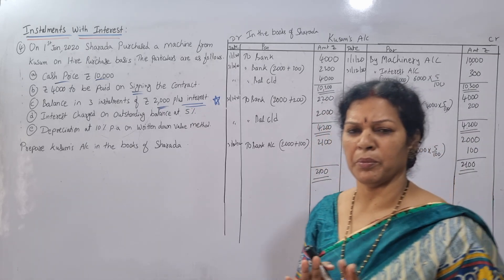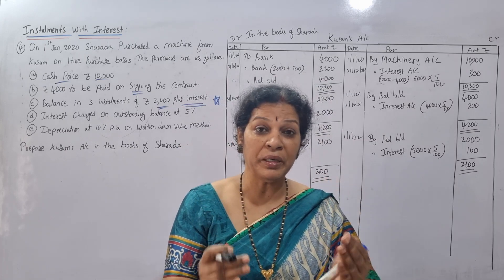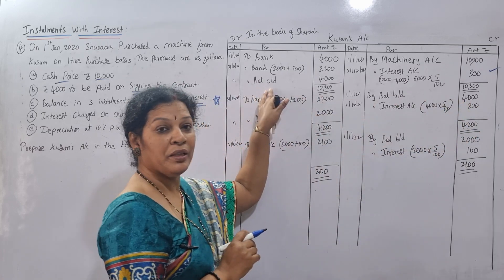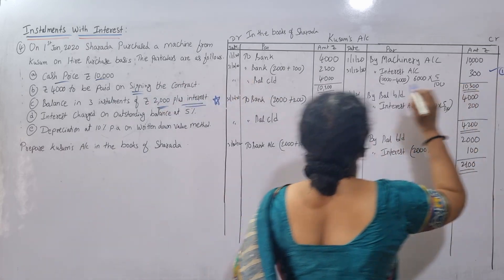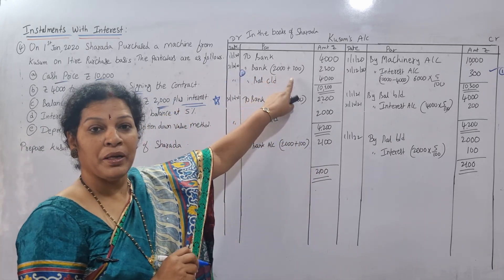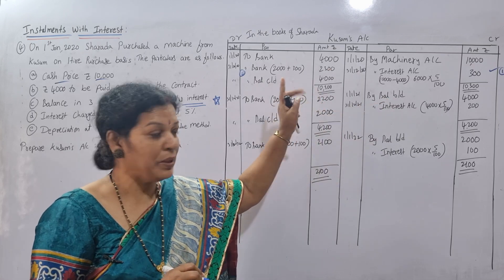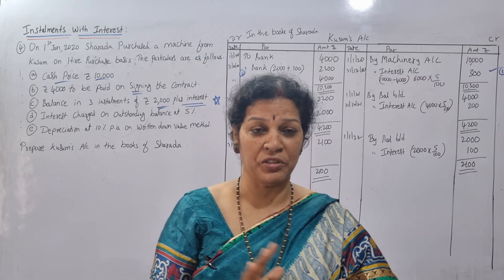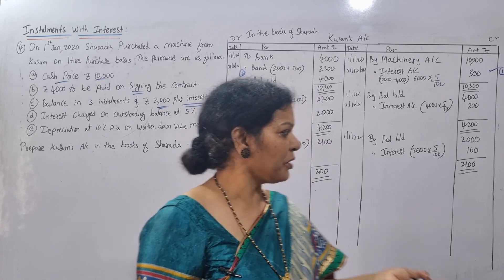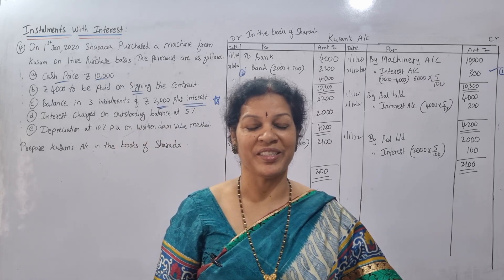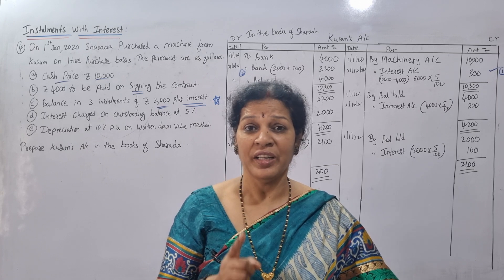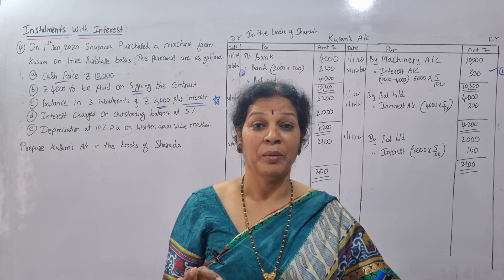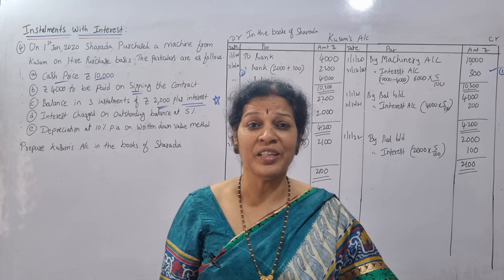Remember the twist of this problem: you are asked to make the payment of installment with interest. First, calculate the interest — make that entry first — then make the installment entry, because installment plus interest together is the payment. If you also need to open the machinery account with depreciation, it's very straightforward. More problems will be worked out — stay connected and check the playlist. This channel is useful for everyone: B.Com, BBA, MBA, M.Com, CA, CS, CMA. Please forward these videos to everyone who is struggling to study.